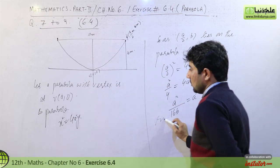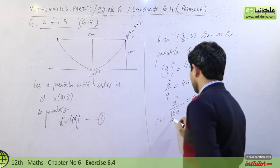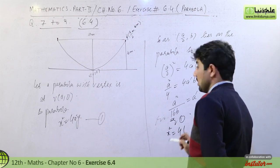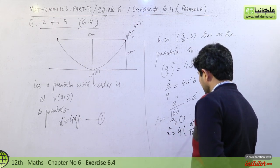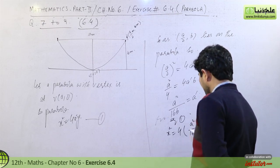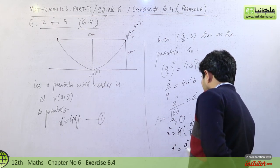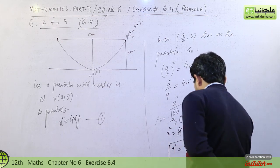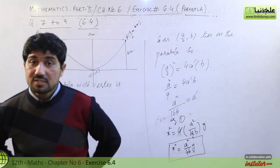Substituting a' = a²/16b back into equation x² = 4a'y, the four cancels and we get x² = a²y/4b. That is the required equation of the parabola for the suspension bridge cables.